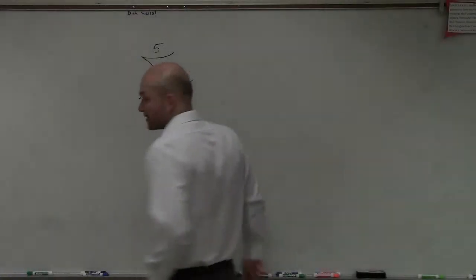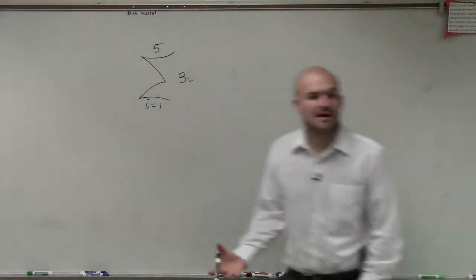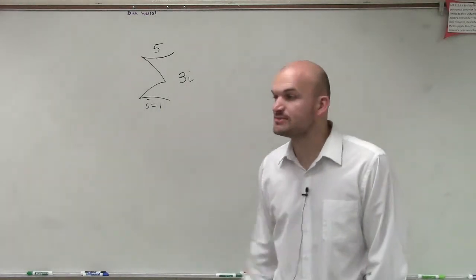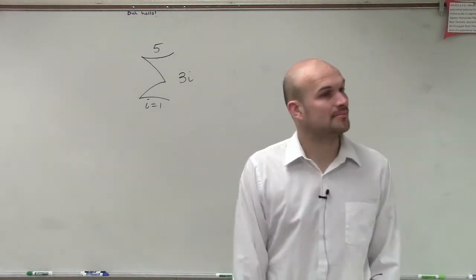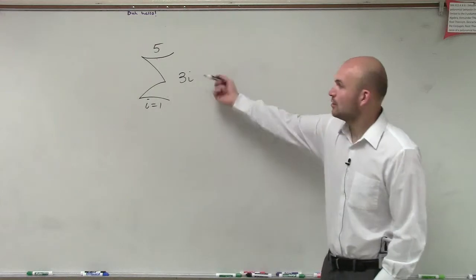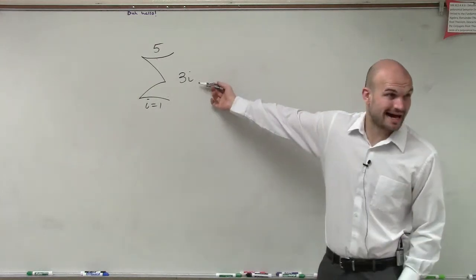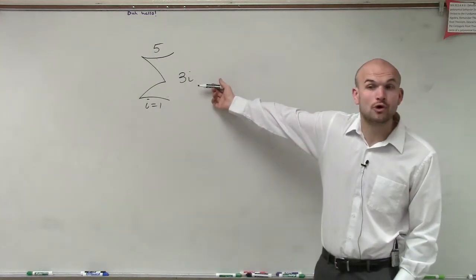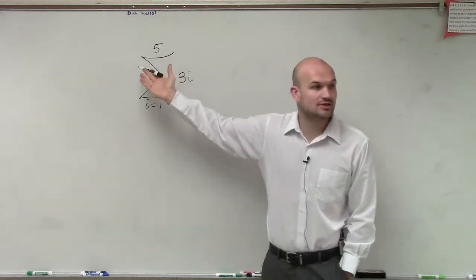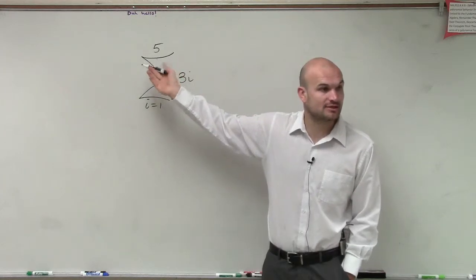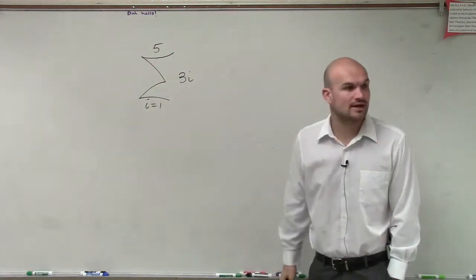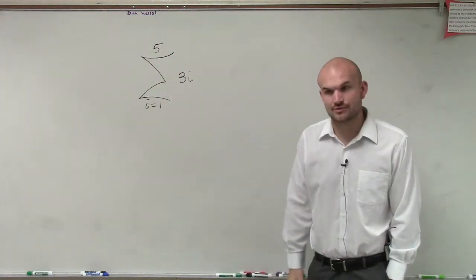What I have here is sigma. What we're going to be doing is finding the sum — sigma is going to represent our sum. Where 3i is going to be our rule, 5 is going to be the terminal term, that's where we're going to end, and i equals 1 is going to be our initial.